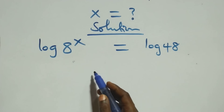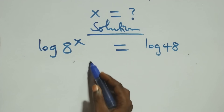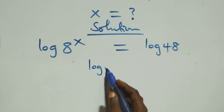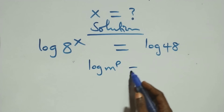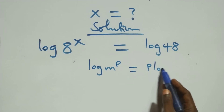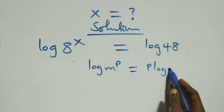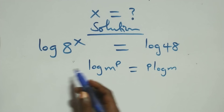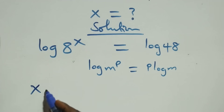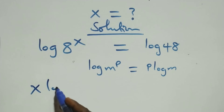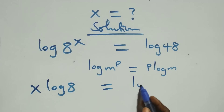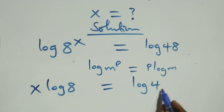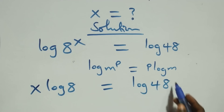we apply a property of logarithms. When we have log m raised to power p, it's the same thing as p·log m. At this here, this becomes x·log 8 equals to log 48 on this side.